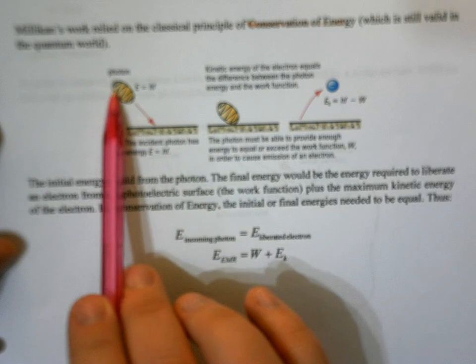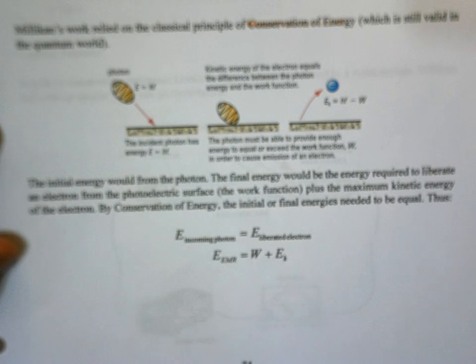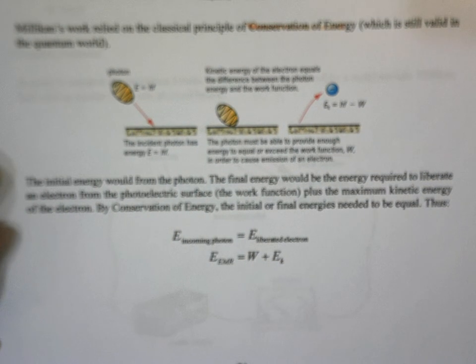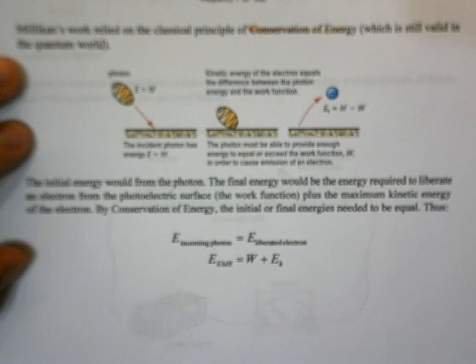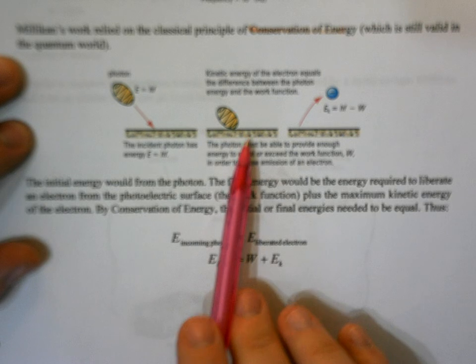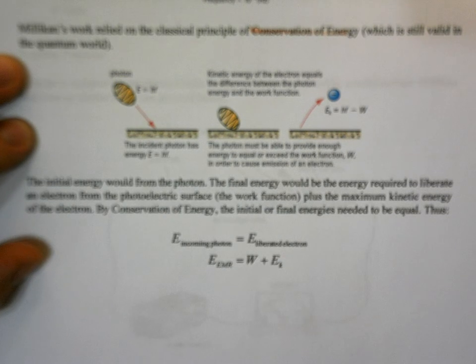On the incoming side, we have the energy related to the photon — the energy of the photon coming in. We know how to calculate it using Planck's equation: it's hf or hc over lambda. After the photon hits the surface, there are two contributions to the energy. First, there's the minimum energy that has to be overcome to liberate the electron — that's the work function. Whatever is left over goes into the kinetic energy of the electron.